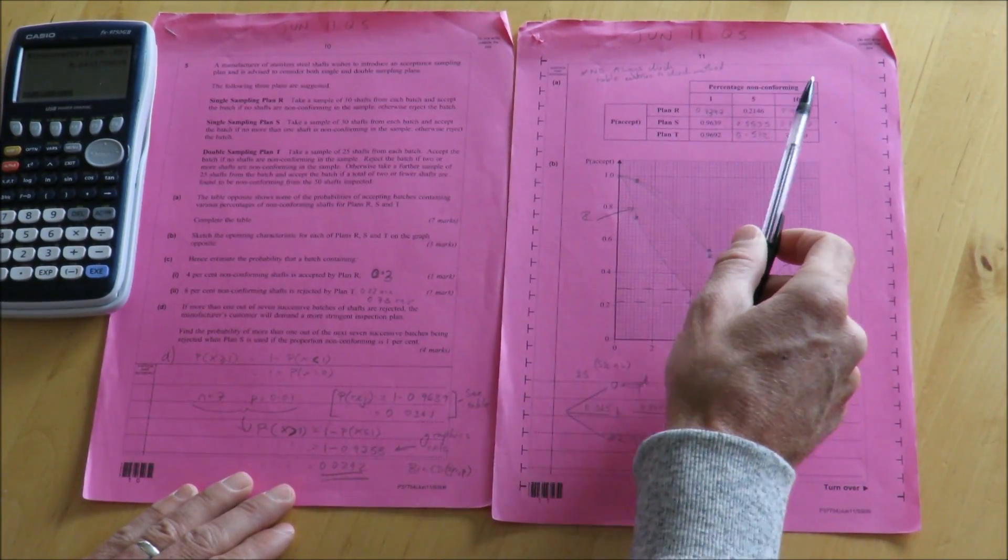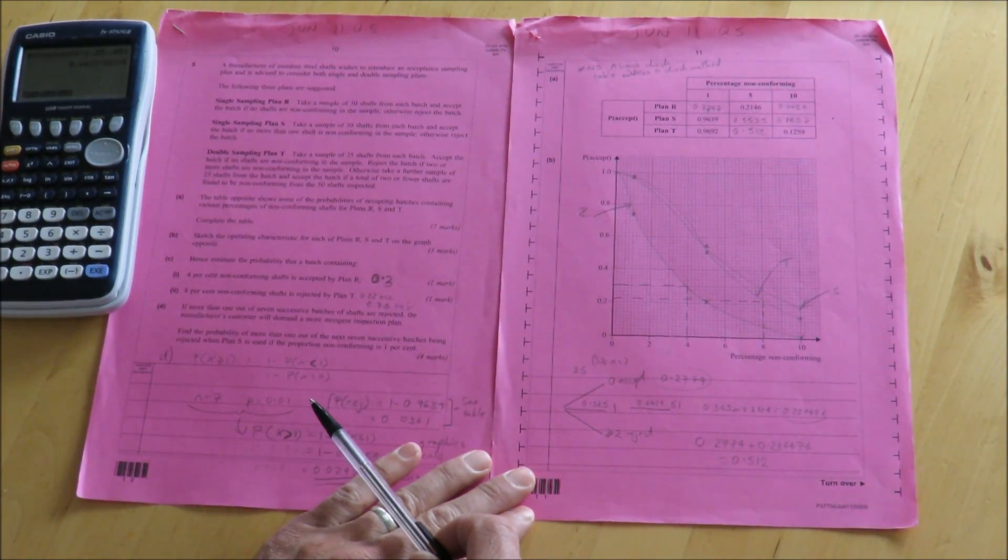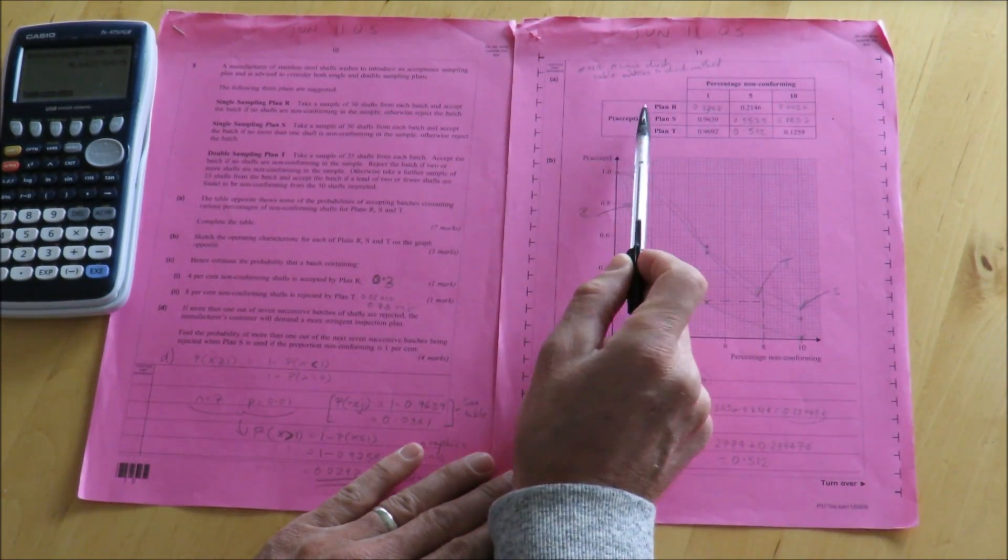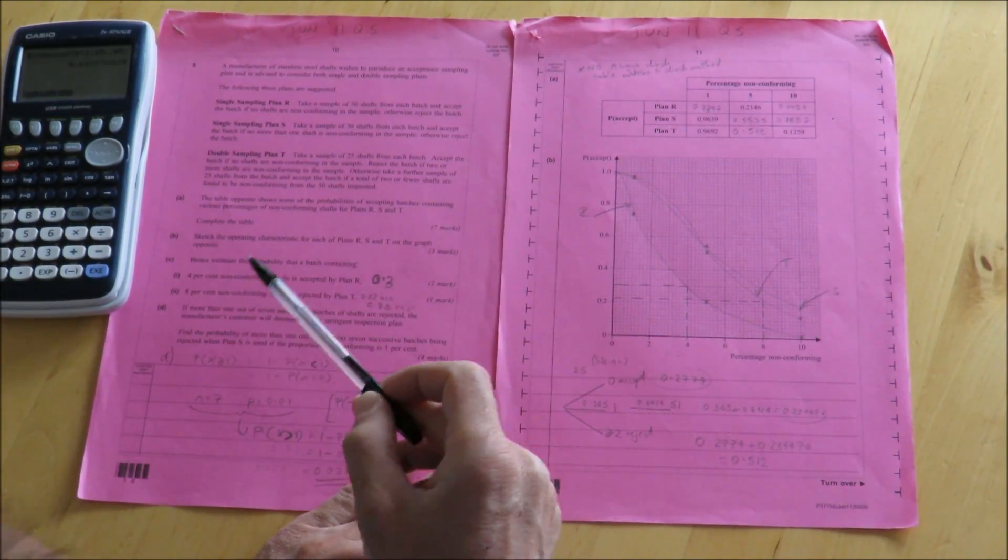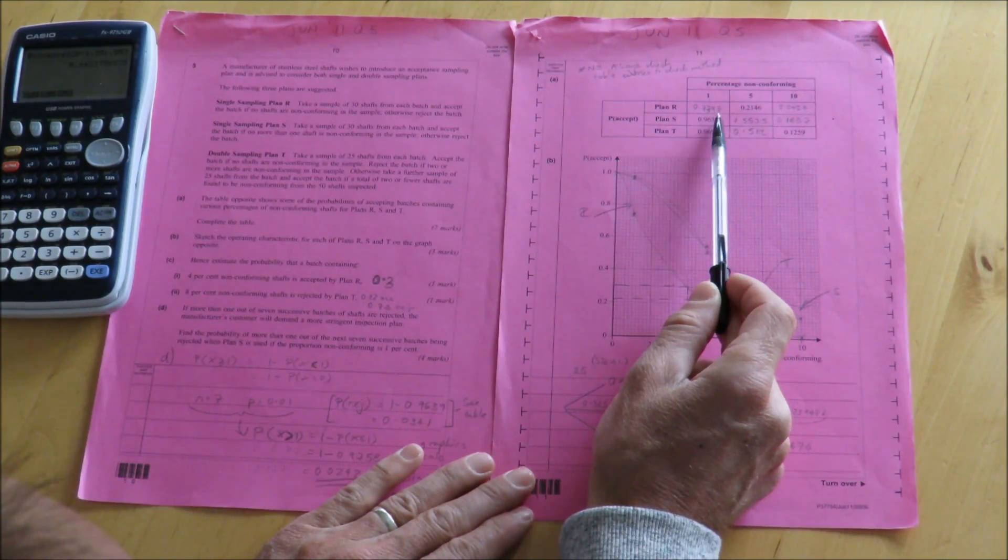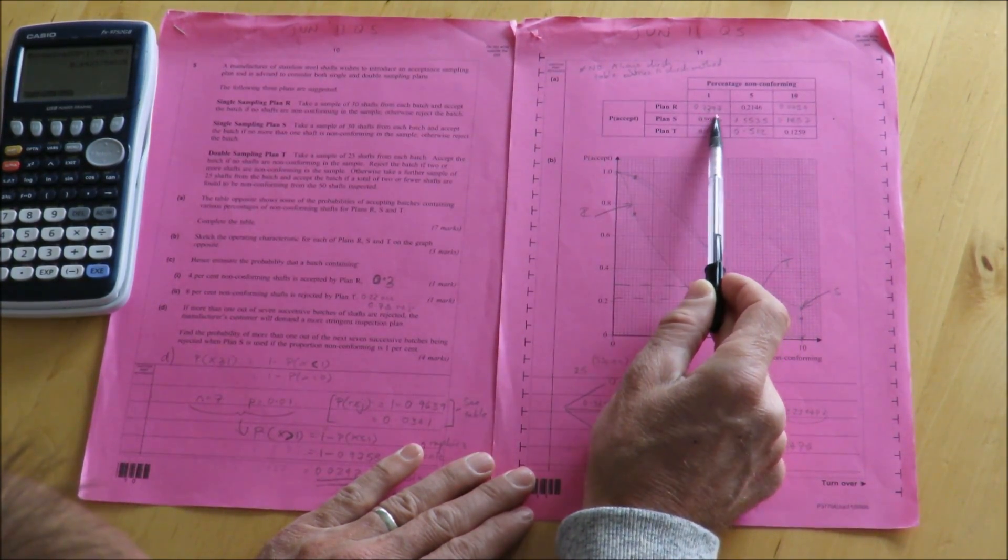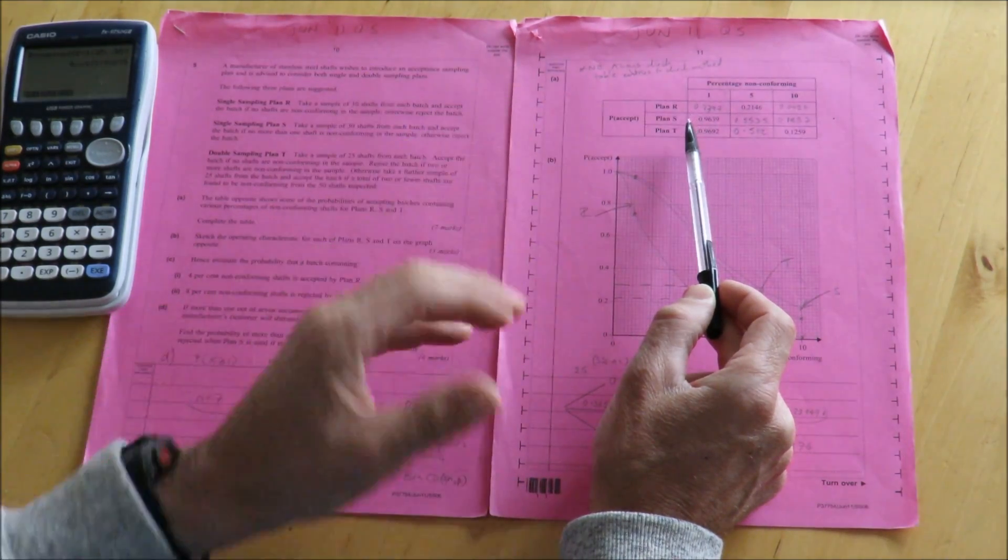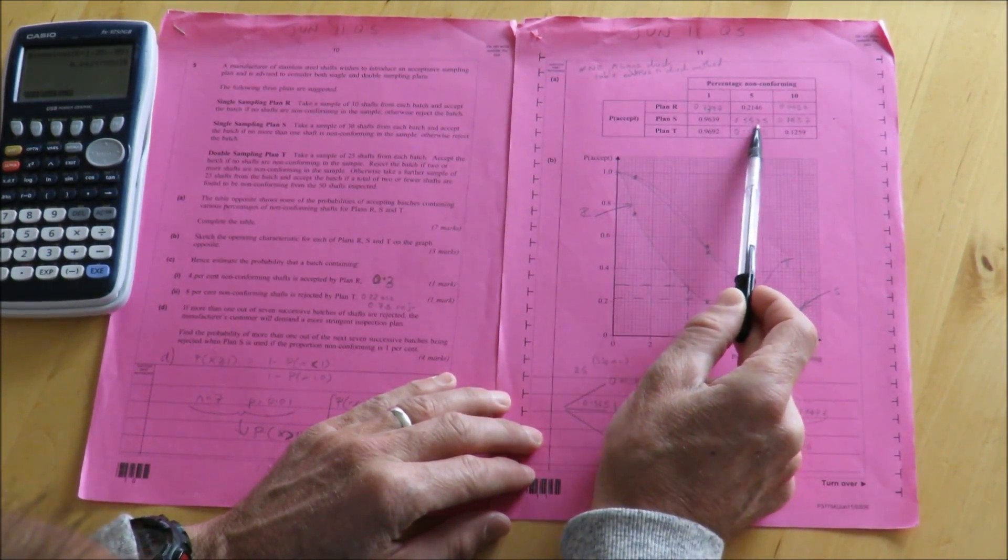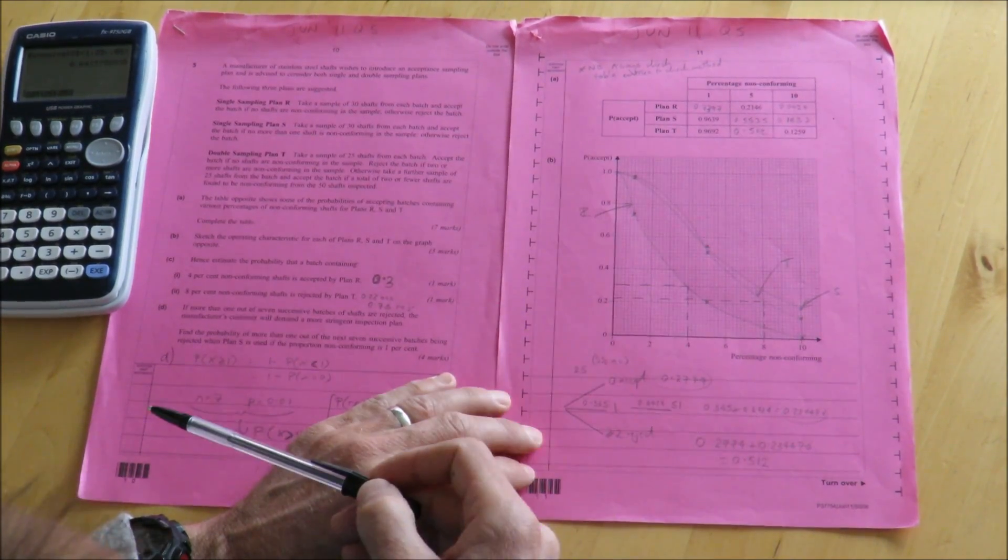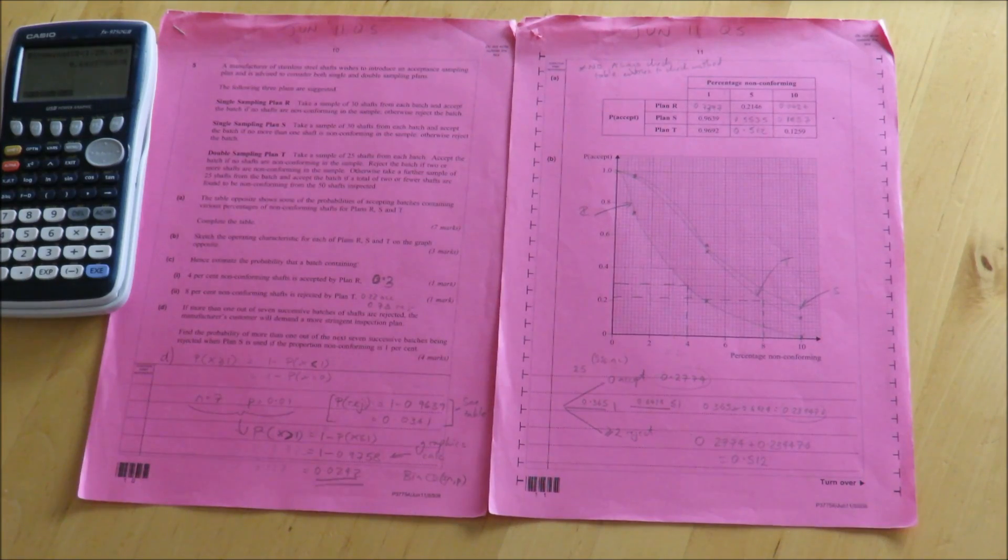So in summary, this question, it's really important to get the table values right because obviously they feed into the operating characteristic. There is an incremental level of difficulty here because the first two plans are single sampling plans. My advice in the exam would actually be to try one of the values that's already given in the table just to show that your method's working. Then you know that you're on the right track. The double sampling plan is where the marks are really scored here because this is a slightly different skill and get used to using the probability tree diagram to help you with that question.